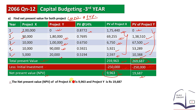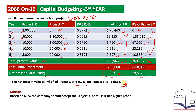Therefore, the net present value of Project X is 9,983 and Project Y is 9,987. Based on NPV, the company should accept Project Y because it has a higher net present value, meaning higher actual profit. So NPV analysis recommends accepting Project Y.